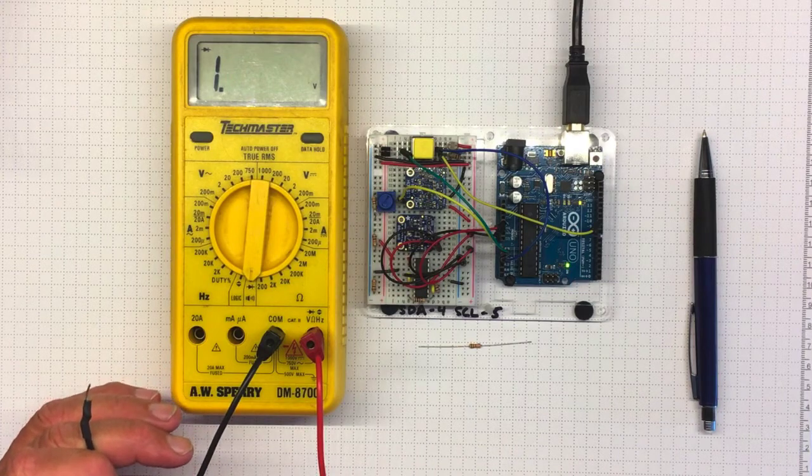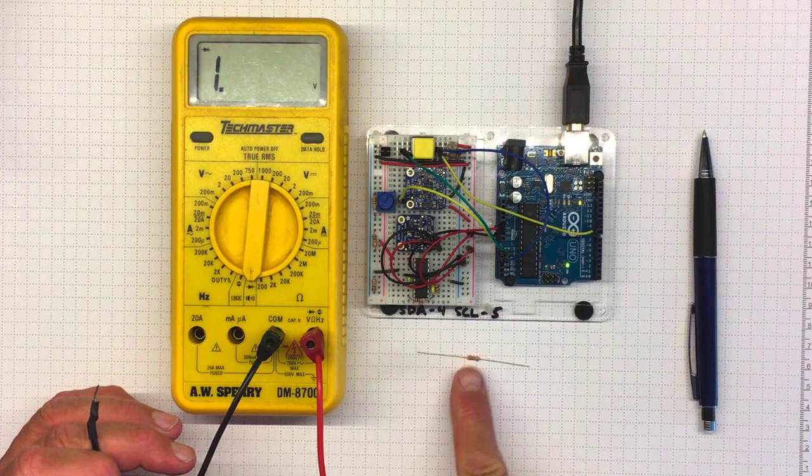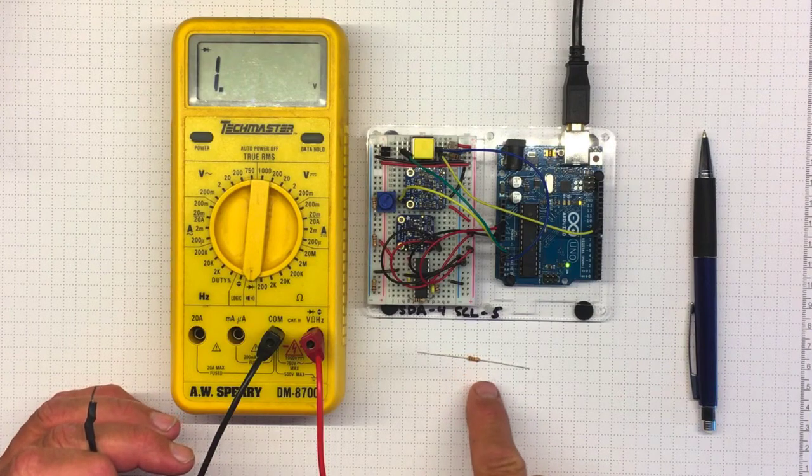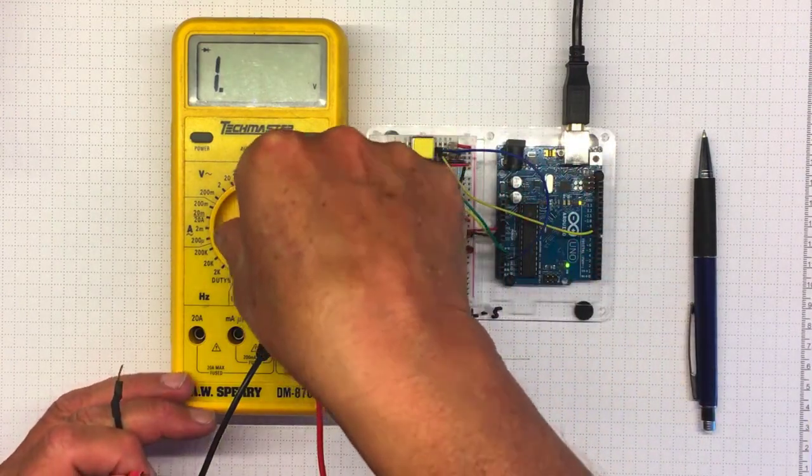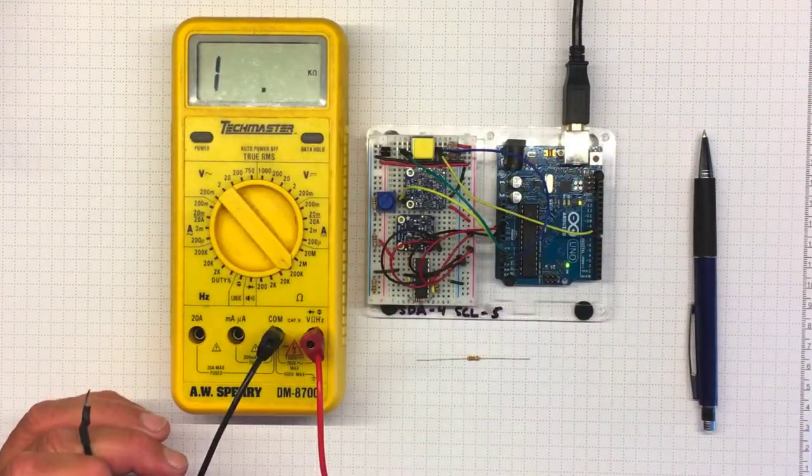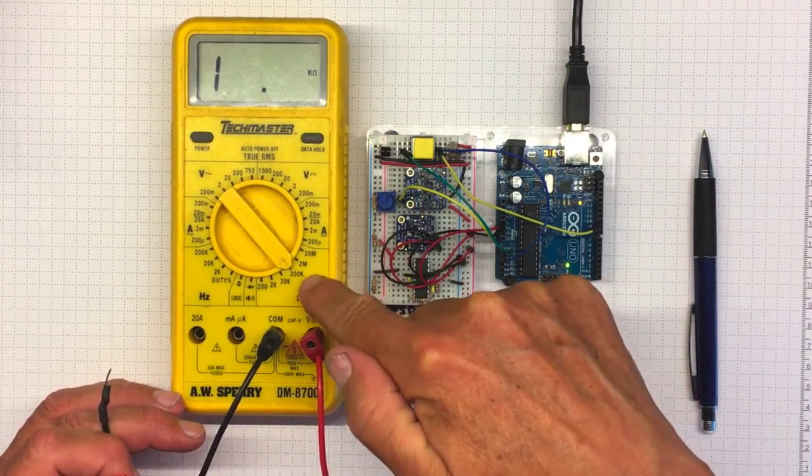The next thing we might want to do is measure resistance. We'll want to measure resistance on a resistor or a component that's isolated from the rest of the circuit. And we can pick one of these resistance measurement ranges here in the ohms section.